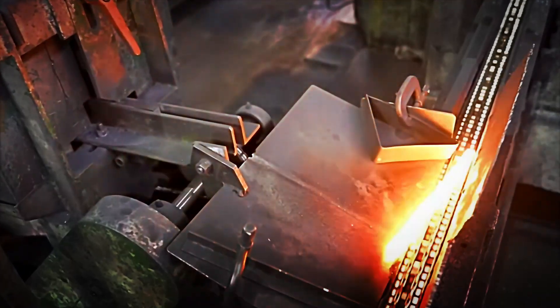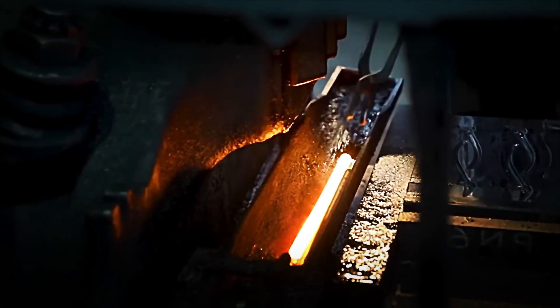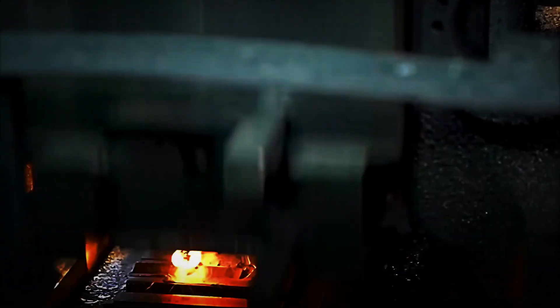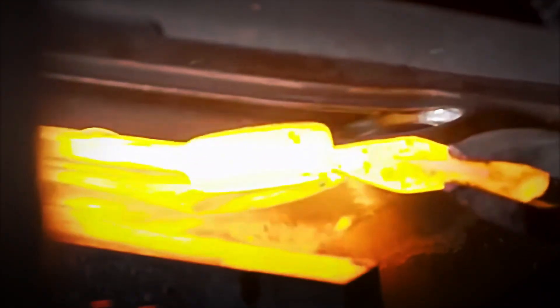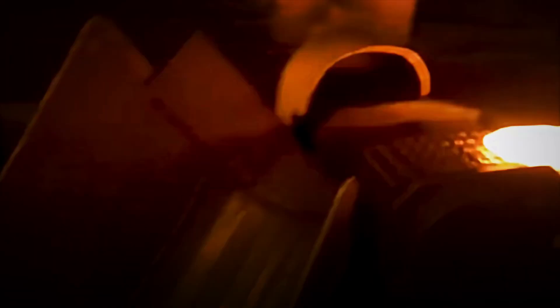When the parts are red-hot, trained operators remove them and place them in gigantic presses. These presses exert forces close to 3,000 tonnes and use hardened steel dies that have the approximate shape of the key.